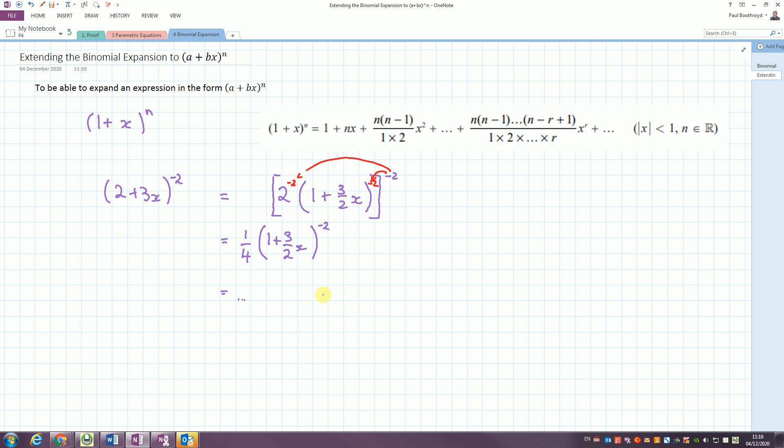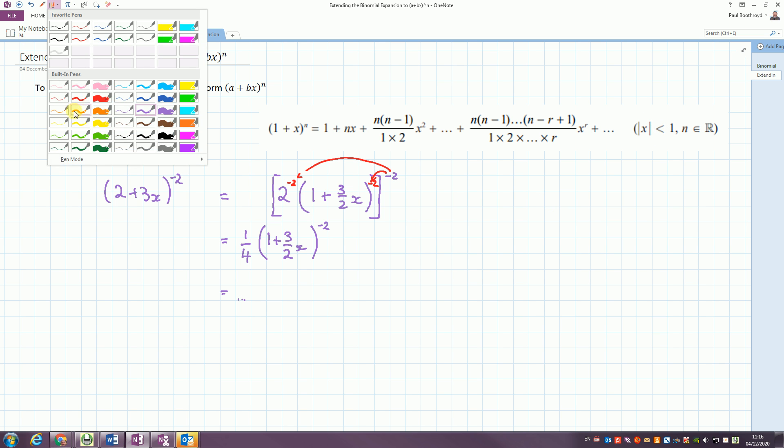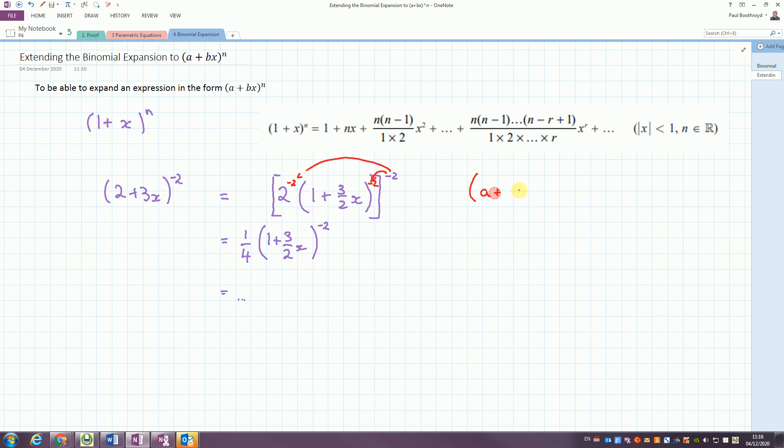The other part of the lesson is actually what does this do to change this function. So the general form, if we do a plus bx to the power of n, we took a bracket out of the a and 1 plus b over a to the x. So we divided both these terms by a and then multiplied by it outside, and that's all to the power of n. We distribute it to the a to the n.